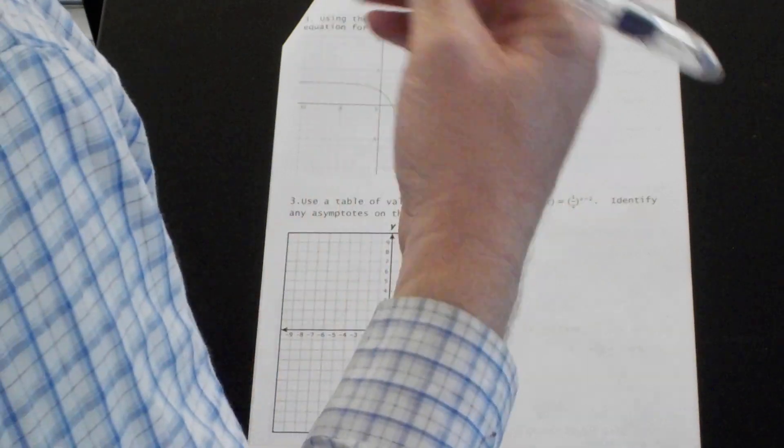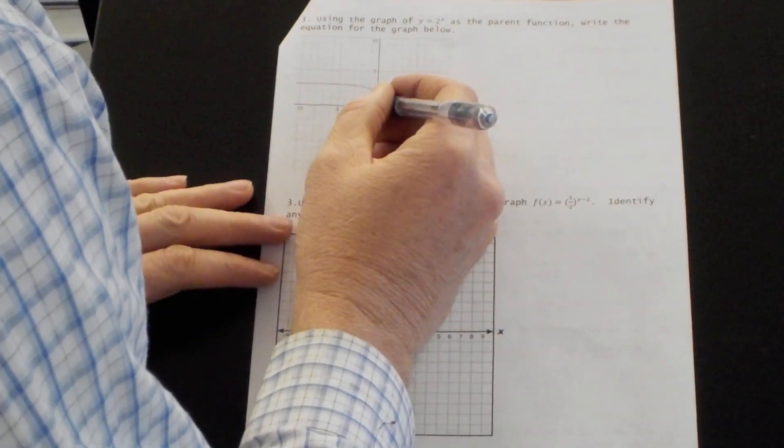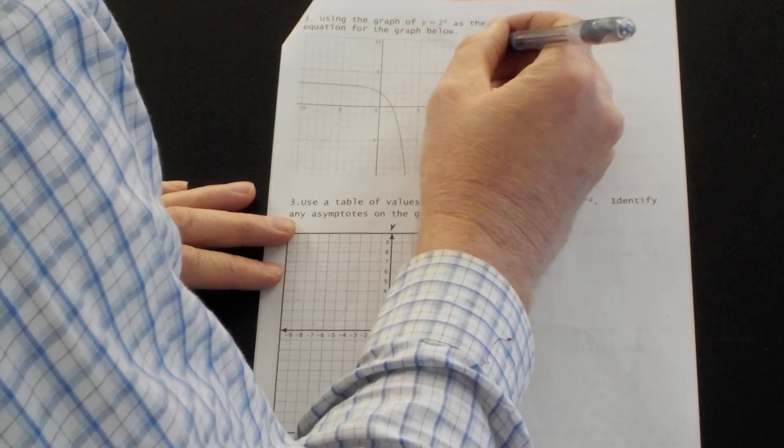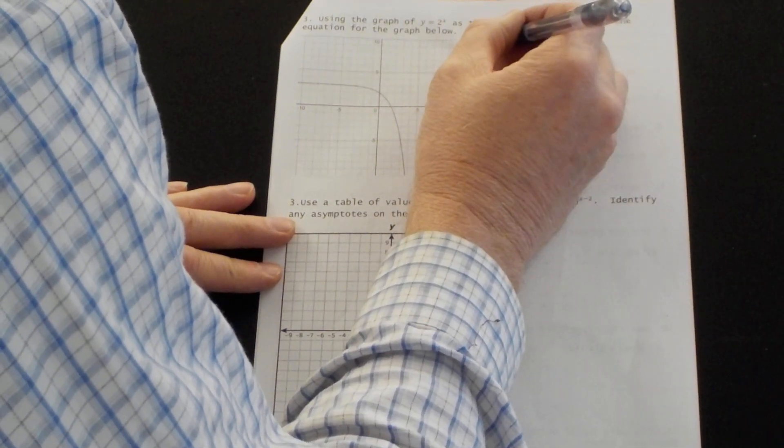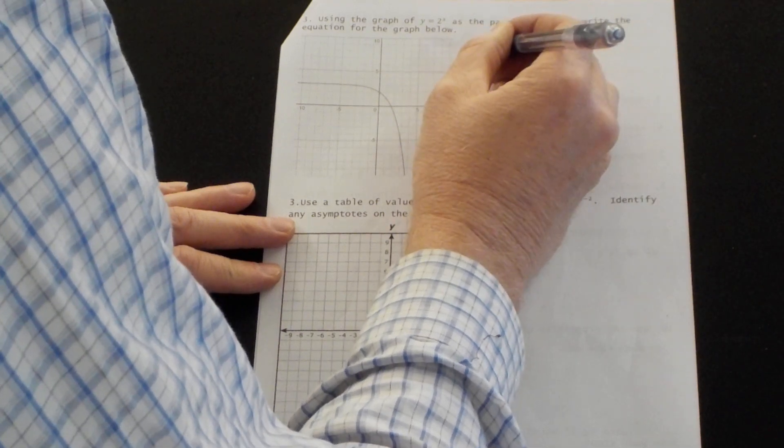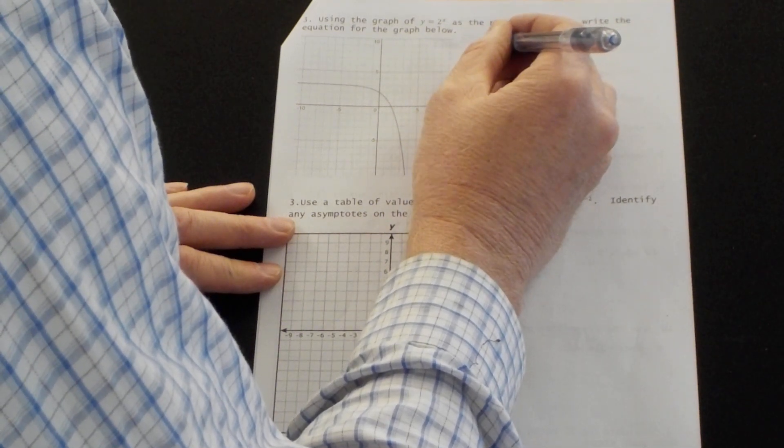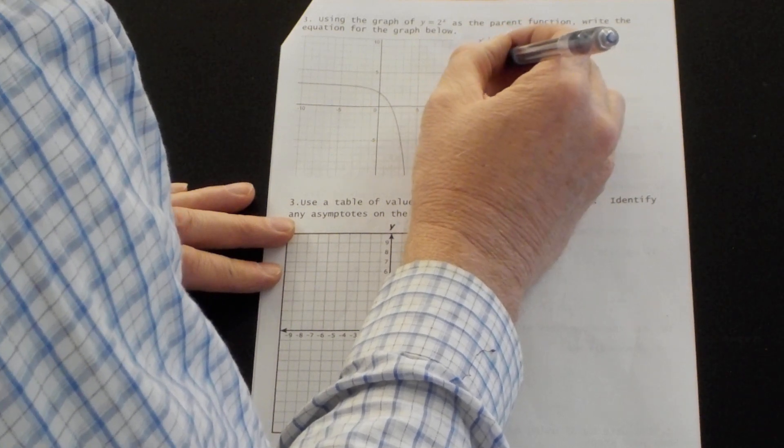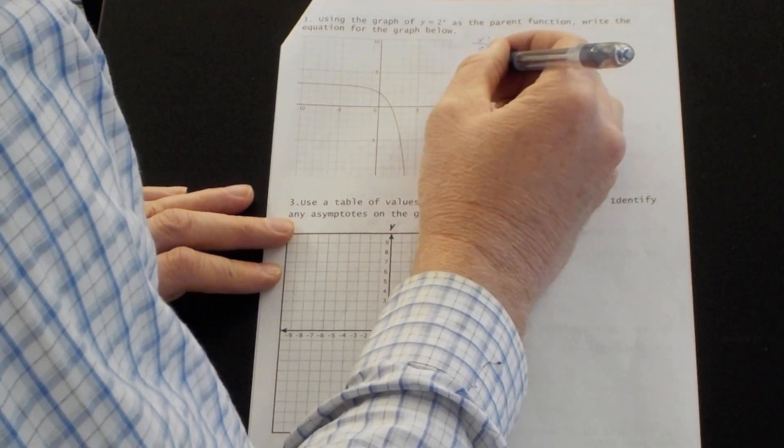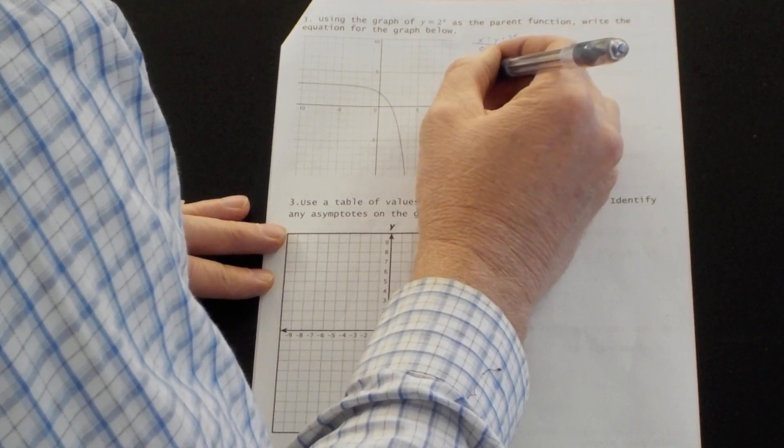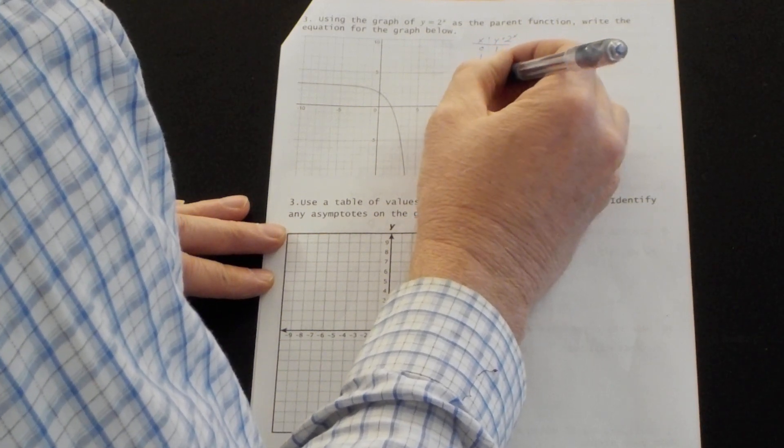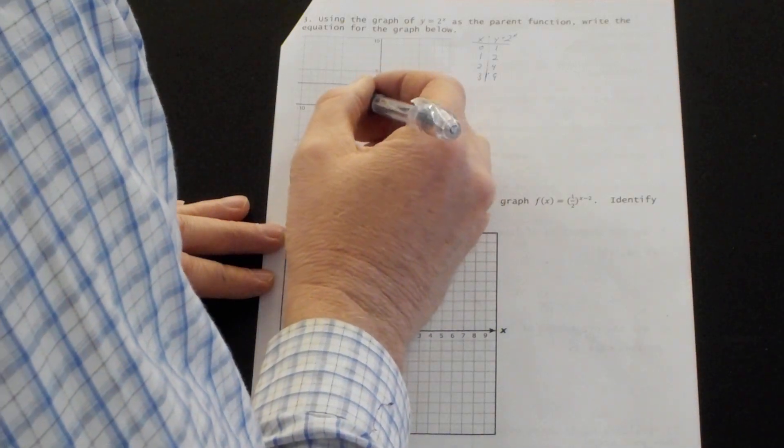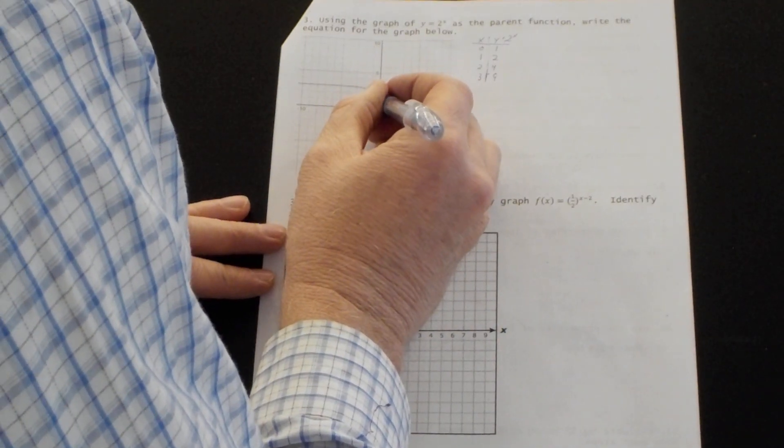I kind of want to just see where y equals two to the x is. When x is zero, two to the zero is one. When x is one, two to the first is two. When x is two, two to the second is four. When x is three, three to the second is nine. So I got this.